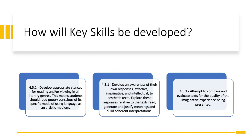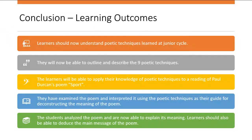Learners should now understand poetic techniques learned at junior cycle and will be able to outline and describe the nine poetic techniques. The learners will be able to apply their knowledge of poetic techniques to the reading of Paul Durkan's poem Sport. They have examined the poem and interpreted it using poetic techniques as their guide for deconstructing meaning, and students have analysed the poem and are able to explain its basic meaning, including deducing the main message of the poem.